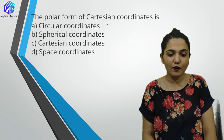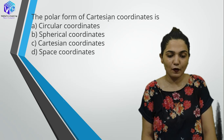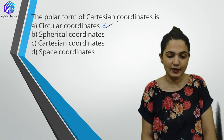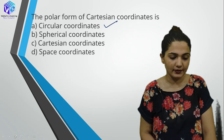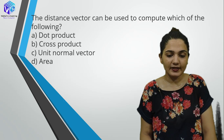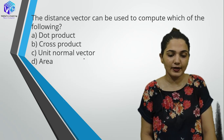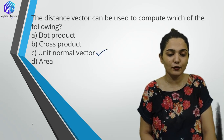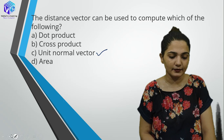The polar form of Cartesian coordinate is circular coordinate. The distance vector can be used to compute the unit normal vector.